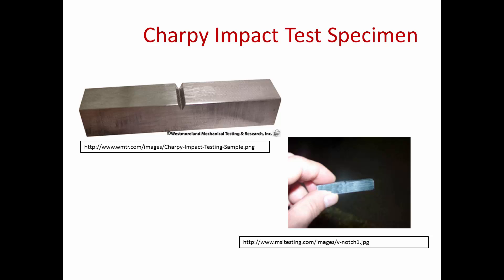The most common way that the ductile to brittle transition temperature is determined is with a Charpy impact test. This slide shows a couple of images of the test specimen. It's a little sample that's a couple inches long, and there's a V-notch that's cut into one edge of the sample, and that forms a stress concentration.